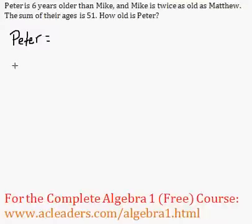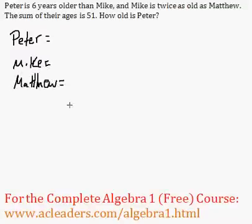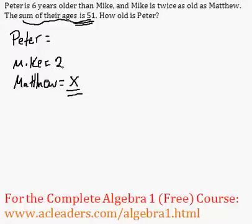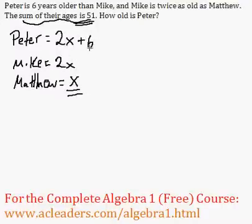So we have Peter, Mike, and Matthew. The sum of all their ages is 51. Mike is twice as old as Matthew, so I'm going to say that Matthew's age is x. Mike is twice as old as Matthew, so Mike's age can be represented by 2x. And Peter is six years older than Mike, so Peter's age is going to be 2x plus 6, because Mike's age is 2x, and then we just add 6.